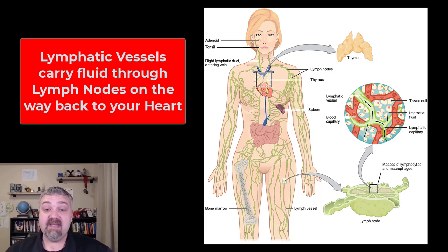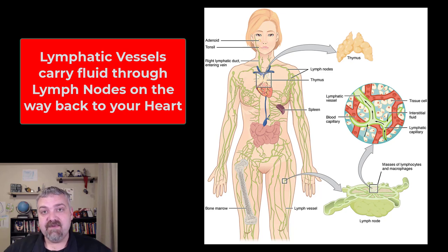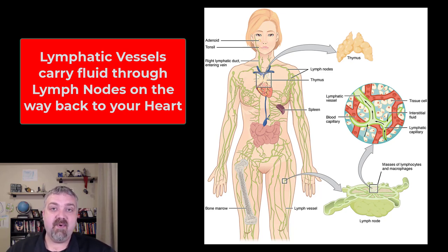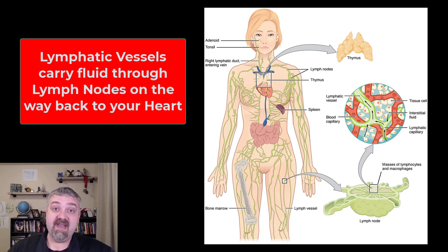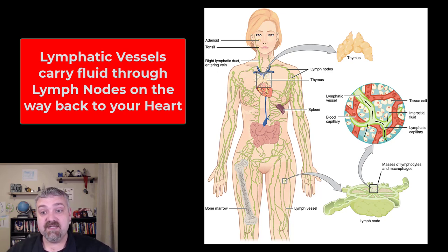Dispersed throughout your body are 500 to 600 lymph nodes. I think about them like checkpoints — 500 to 600 checkpoints that this fluid has to go through. The job of your lymph nodes is to filter out 99% of what's traveling through and also look for pathogens, for invaders to show to the immune system.